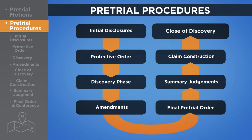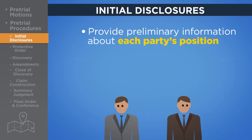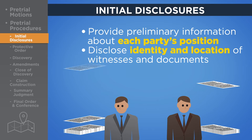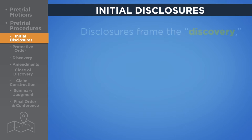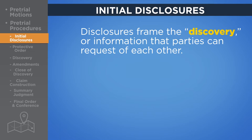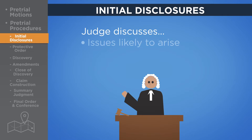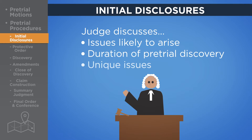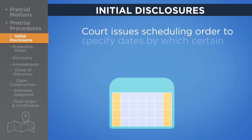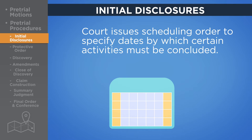Pretrial Procedures. The first steps in the pretrial procedure are the filing of initial disclosures and the holding of the preliminary pretrial conference. Initial disclosures must provide preliminary information about each party's positions in the case and disclose the identity and location of witnesses and documents likely to be relevant to the issues. These disclosures help frame the discovery — the information that the parties can request of each other — which is one of the hallmarks of litigation in the U.S. At the preliminary pretrial conference, the judge discusses the issues likely to arise in the case, the expected duration of pretrial discovery, and any unique issues such as witnesses in foreign countries. The court then issues a scheduling order specifying dates by which certain activities must be concluded.